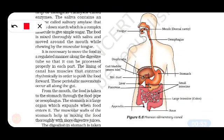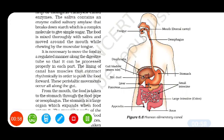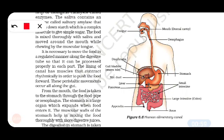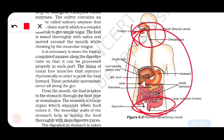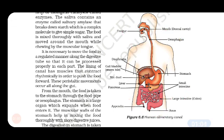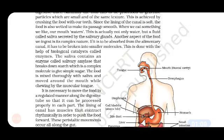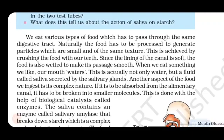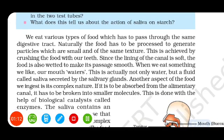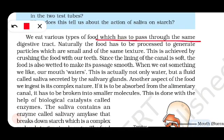We will see this part. The alimentary canal starts with the tongue and mouth and goes to the end. This is the whole structure of the alimentary canal. There are many parts and all functions are different. We eat a lot of different food.